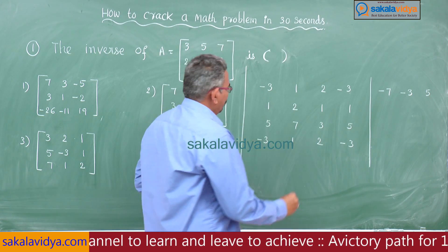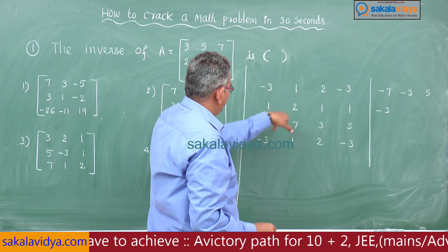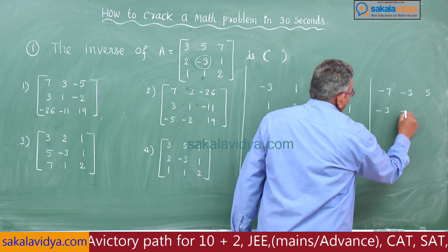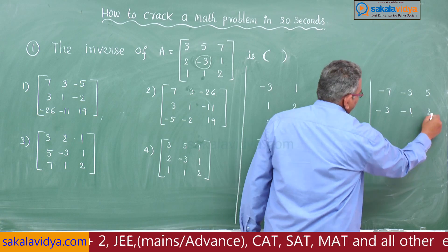7 minus 10 is -3, -10 minus 3, 6 minus 7 is -1, 5 minus 3 is 2. Correct.